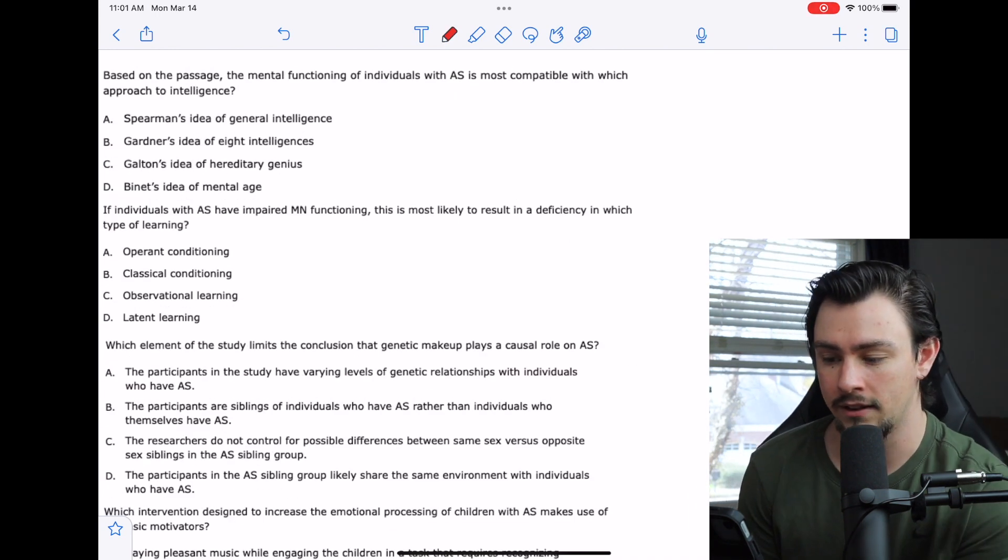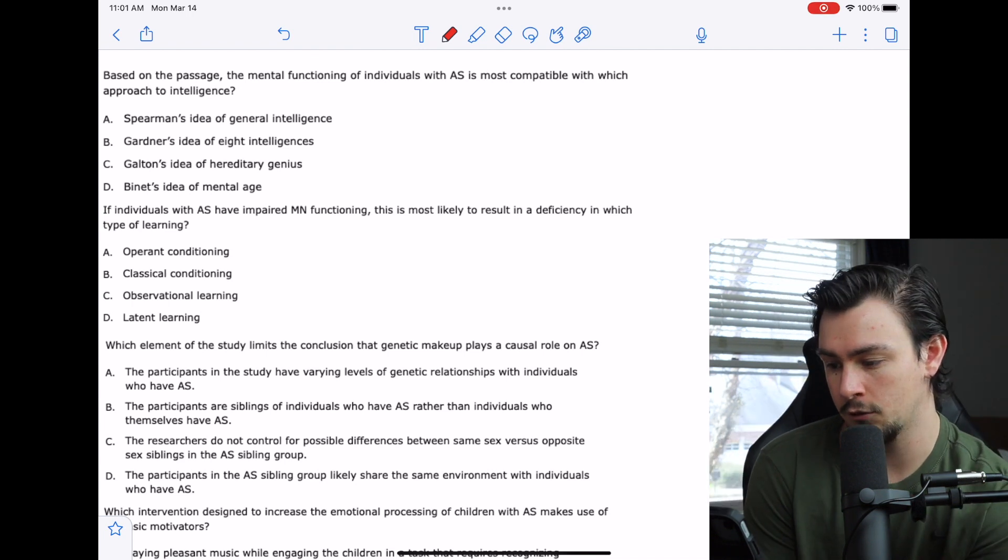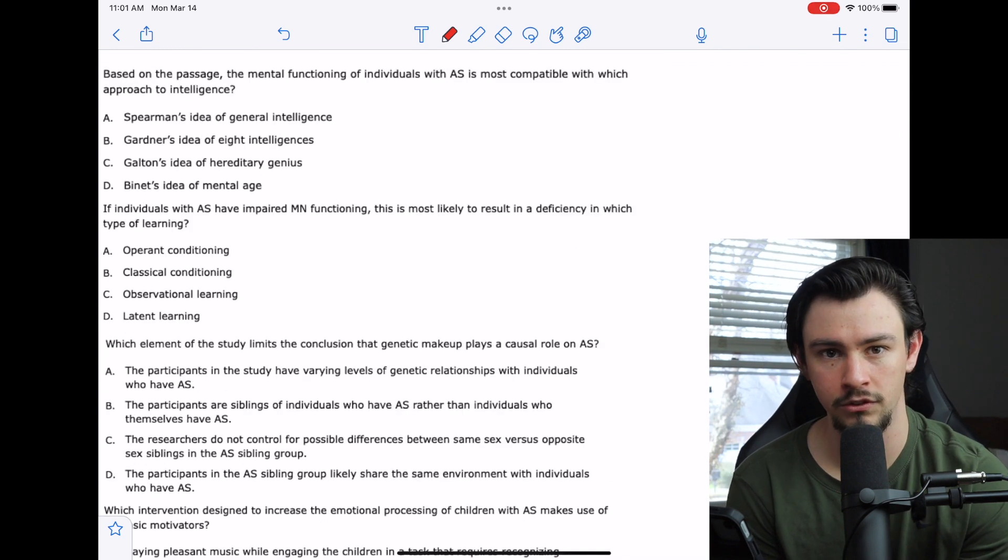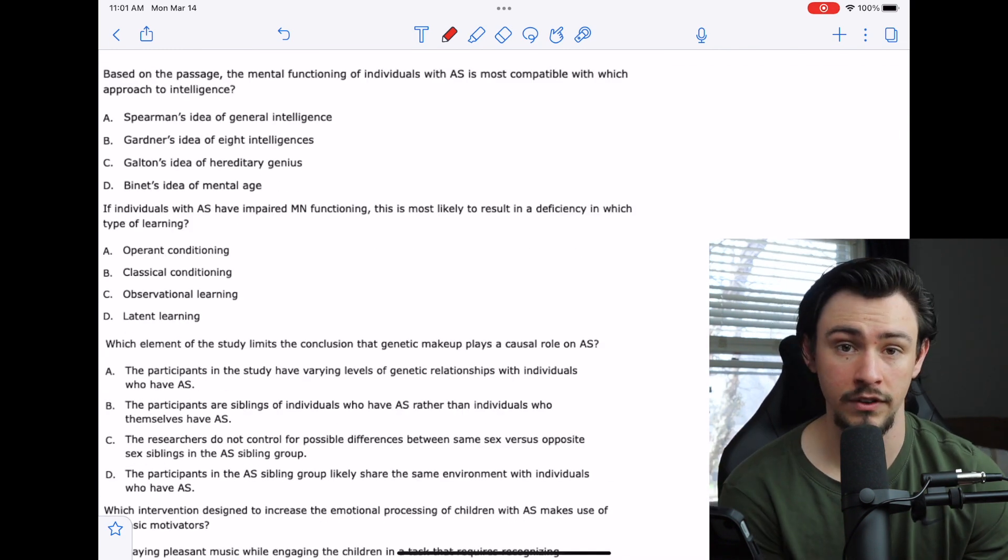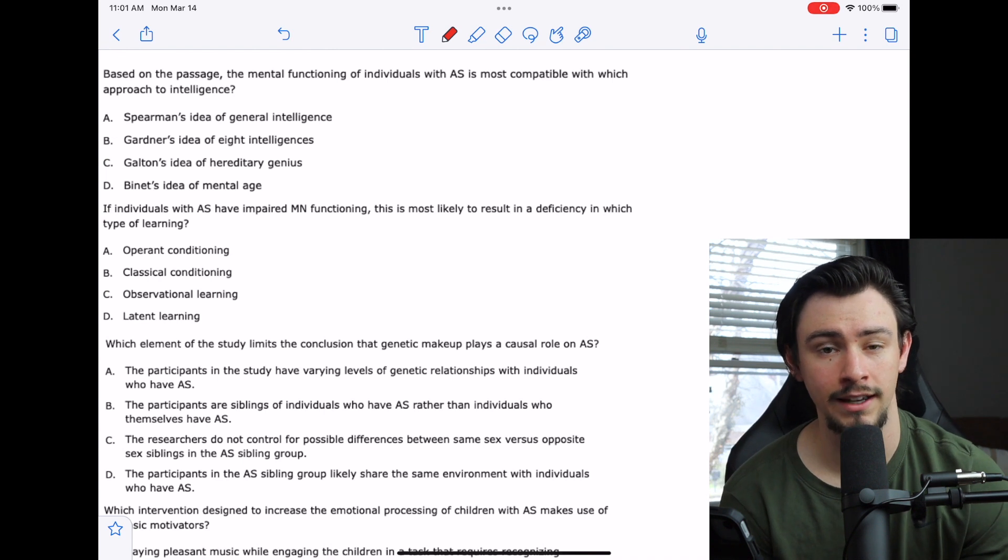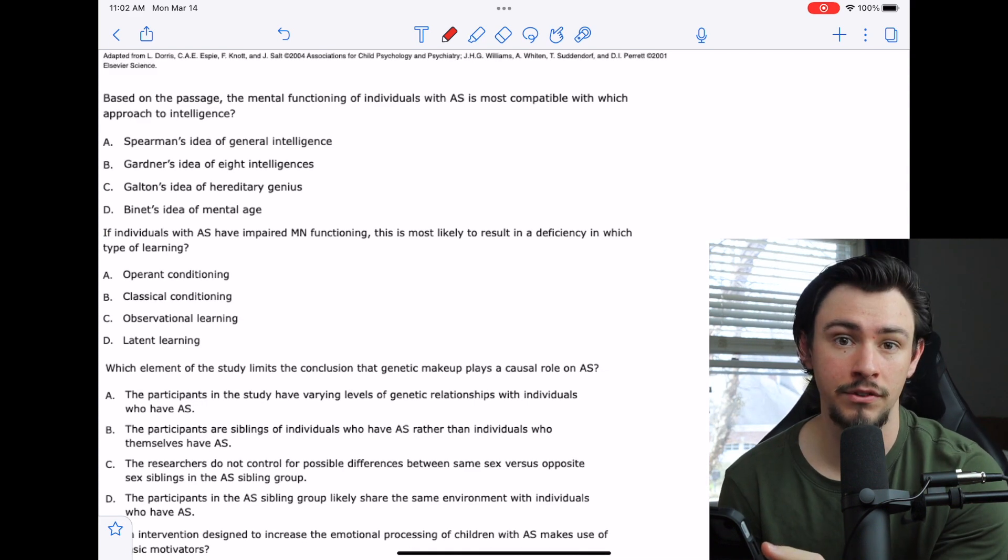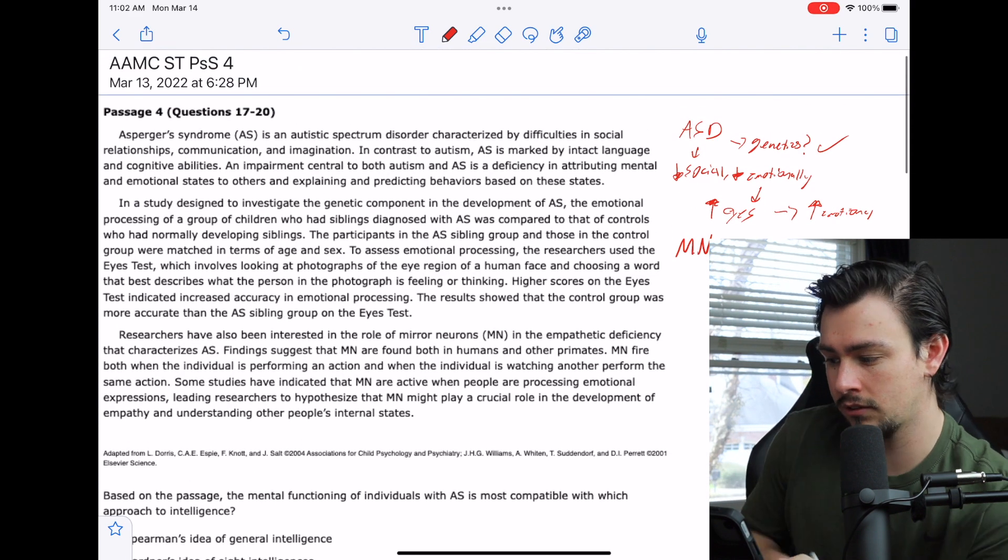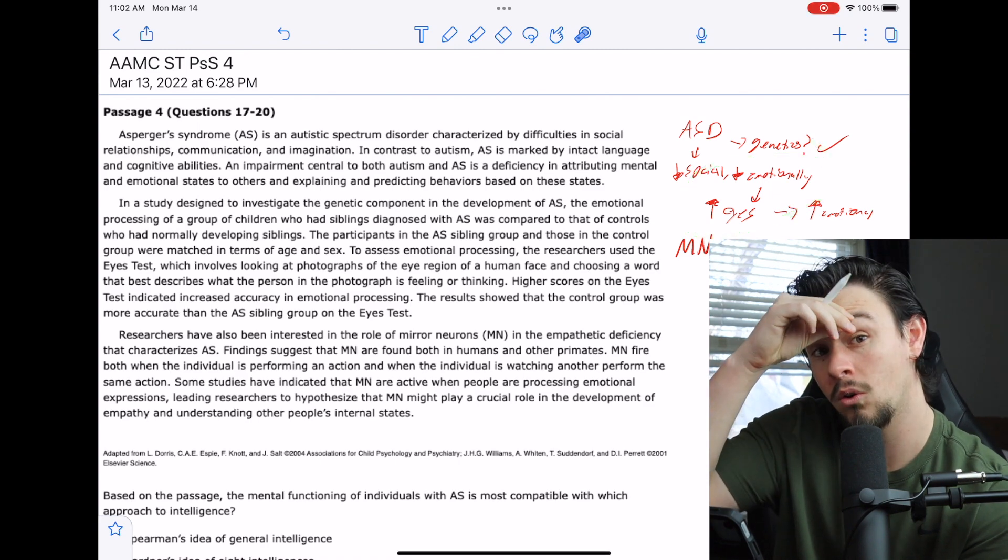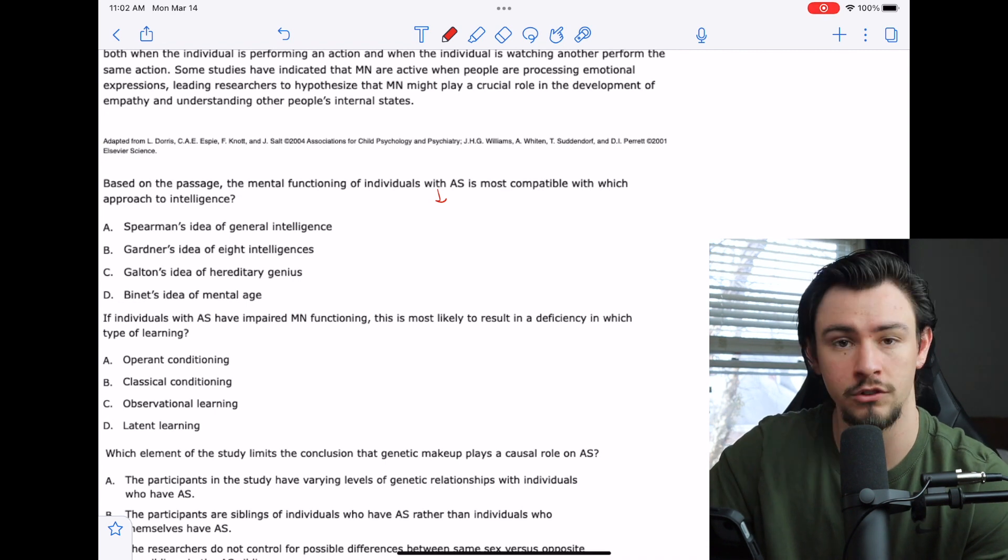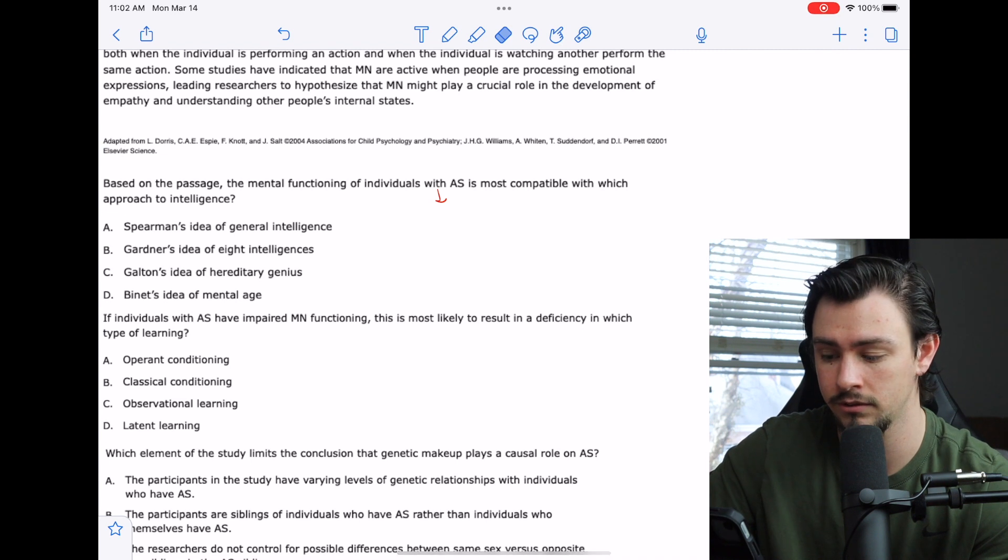Number 17 says, based on the passage, the mental functioning of individuals with Asperger's syndrome is most compatible with which approach to intelligence? I think this question is difficult for two reasons. The first is that you have to figure out what the author is classifying as intelligence based on the deficit that Asperger's syndrome patients experience. Really, what we're looking at here is which of these four is going to show that there are multiple types of intelligence with emotional intelligence being one of those.